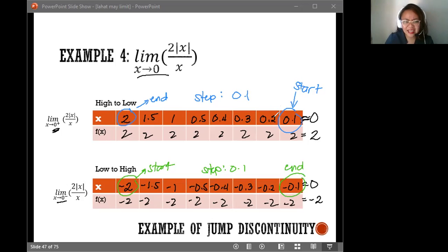So are we approaching the same values for the tables? You have 2 and negative 2. 2 and negative 2 are not equal. Therefore, in this case, since they don't approach the same values, since the tables have resulted to different values, then the limit does not exist. It's DNE, does not exist. And that's the answer for that.